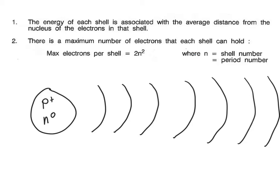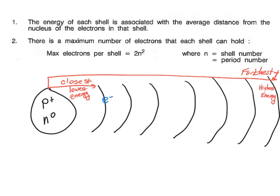We know that the energy of each shell is associated with the distance from the nucleus of the electrons in that shell. That is due to a force of attraction between the positive and the negative charge. That is a type of potential energy.